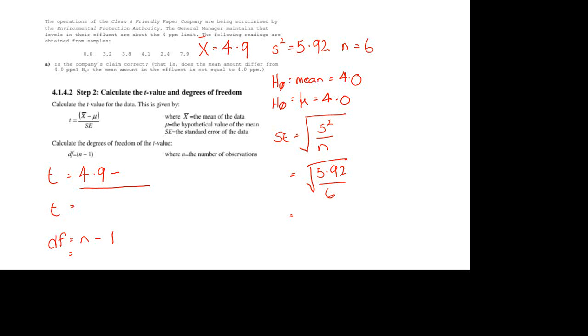I'm going to use exercise 1 in tutorial 4 to illustrate how to do a t-test comparing the mean of a sample to a hypothetical value. In that particular exercise, we have the claim that the population mean in the effluent is 4 parts per million, and we have a set of six observations to use to test that idea.